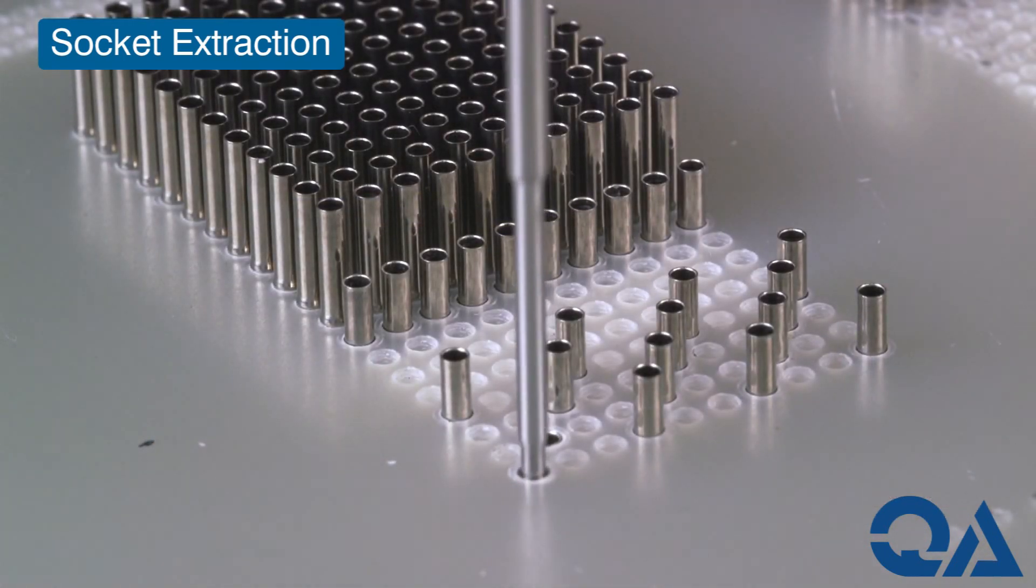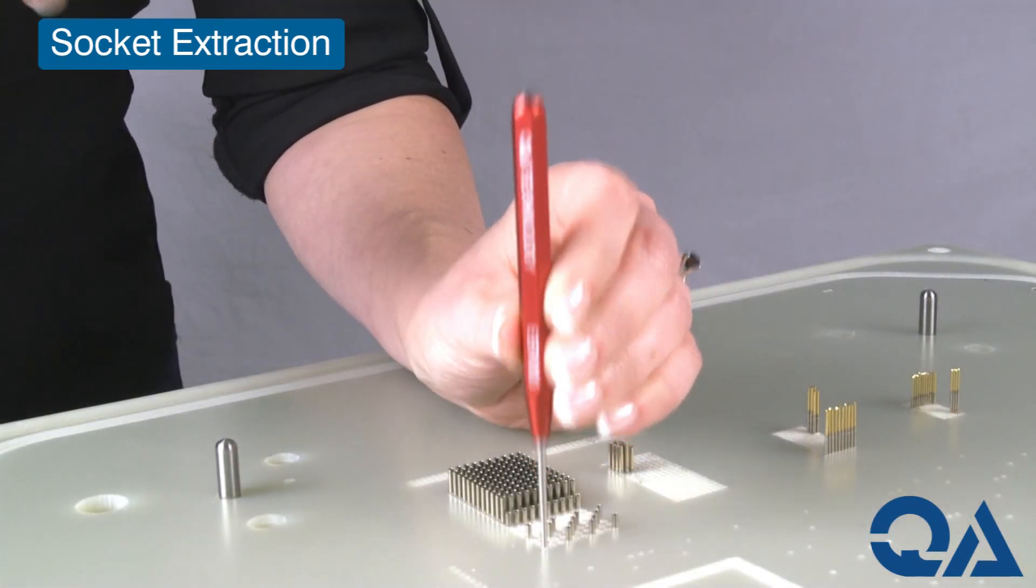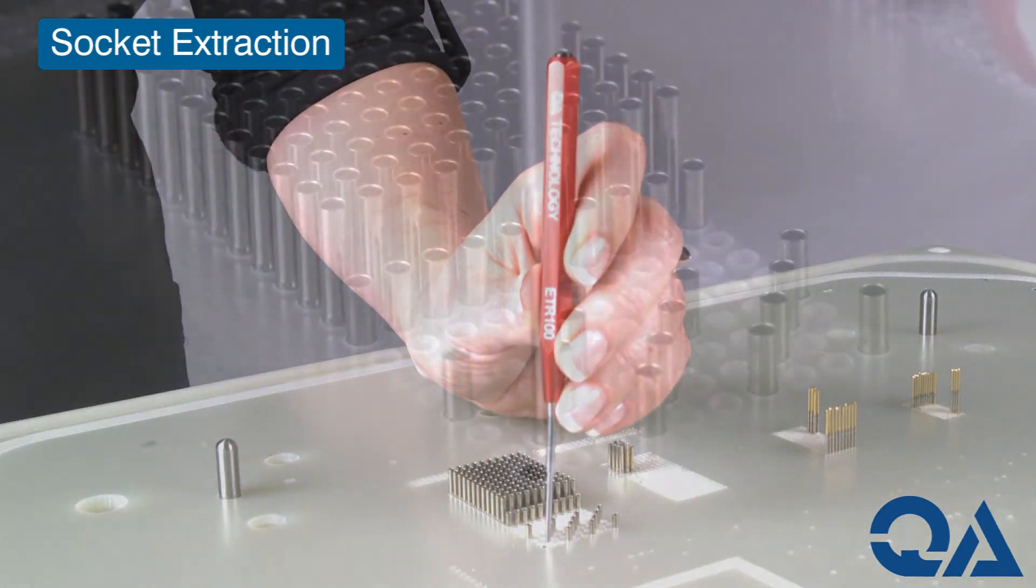Then, using the extraction tool, lightly tap several times until the damaged socket drops out of the back side of the plate.